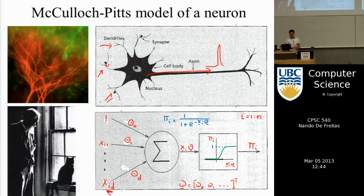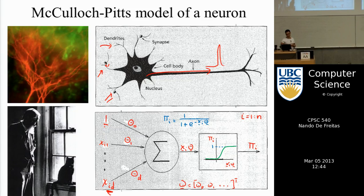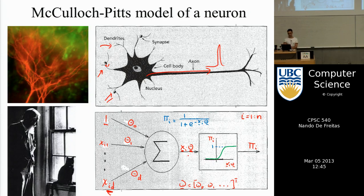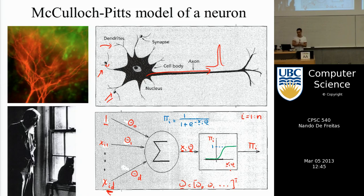Let's start abstracting this mathematically. We have d inputs — d attributes or features as before — and we add a 1 so that we can have a bias term to move the function up and down. Each input gets scaled by a parameter theta, which in neural network language is called the synaptic weight. You take the vector x of all your inputs of size d-by-1 and multiply by the vector theta of size d-by-1, giving a single scalar x_i times theta. So we multiply each input by a weight and sum them all — that's essentially a dot product of x and theta.